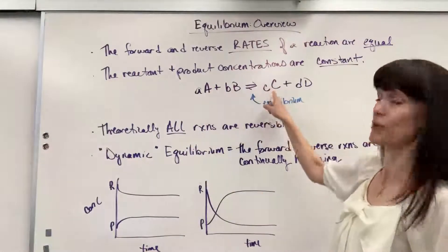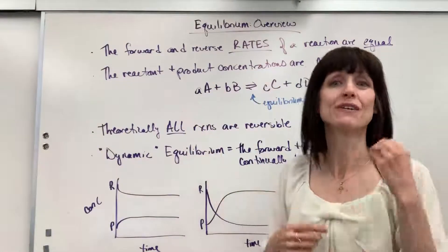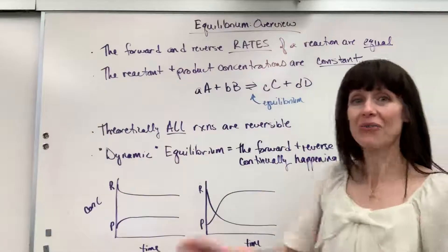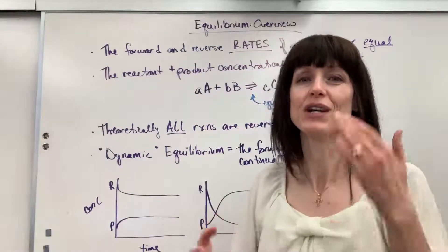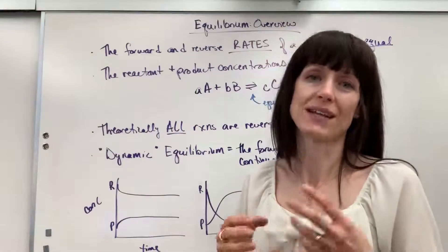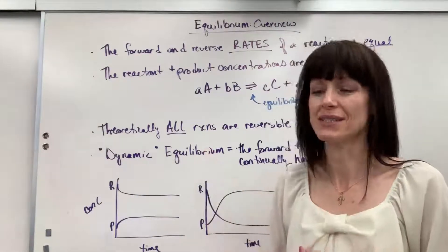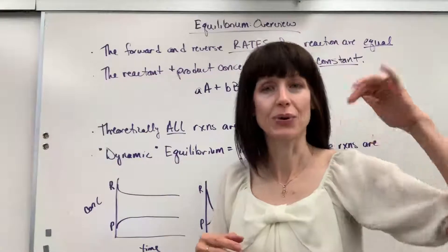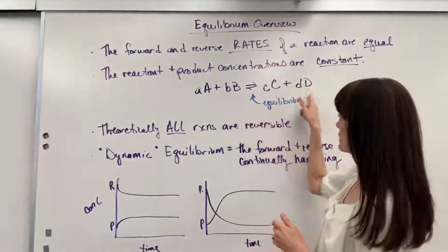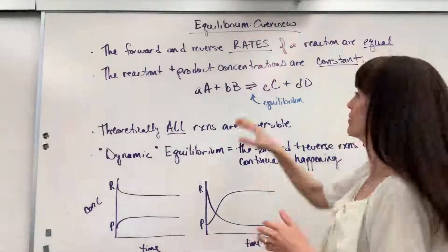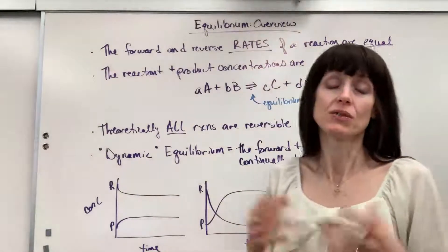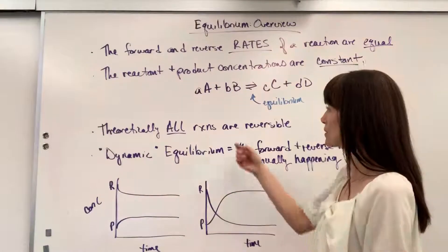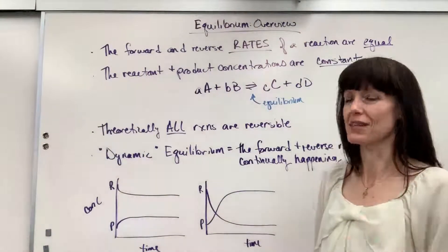The reaction will go in the forward direction — reactants to products — and it will go in the reverse direction, from products back to reactants. Now, in theory, all reactions are reversible. Every reaction can go in the reverse direction. In practicality, we haven't been able to get all reactions to go in reverse — it's like unfrying an egg. But theoretically, everything can be reversed because it's just putting in the opposite amount of energy. Conservation of energy means we should be able to go back and forth. Some reactions in nature we only see go one way, but theoretically everything should be able to reverse.